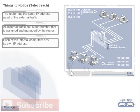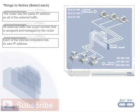Let's look at these firewalls in action. Select each box to learn more about how these services work as a firewall. The router has the same IP address as all of the external traffic. All external traffic has a port number that is assigned and managed by the router. Each of the internal computers has its own IP address.